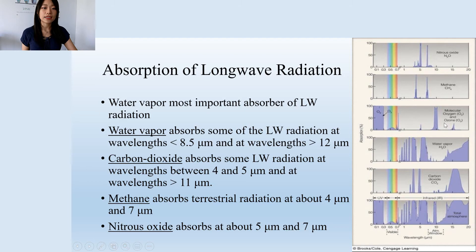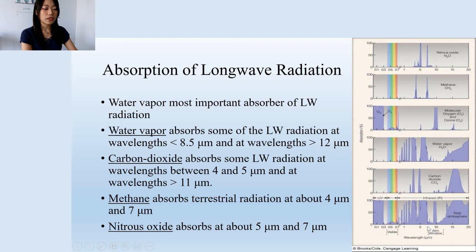We call the gases that absorb longwave radiation the greenhouse gases. The important ones are water vapor, carbon dioxide, and methane. The bottom row shows the absorption spectrum of the total atmosphere. Most of the longwave radiation will be absorbed by the atmosphere, except for the wavelength range between 8.5 to 11 micrometers — and we call this window the atmospheric window.